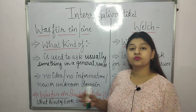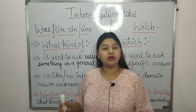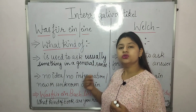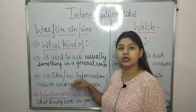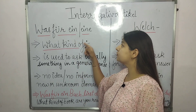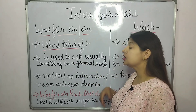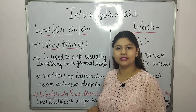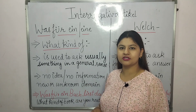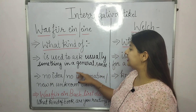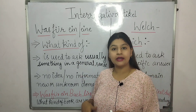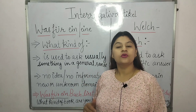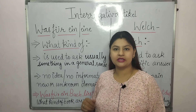So first of all, 'Was für ein oder eine' — the literal translation is 'what kind of.' We use 'Was für ein oder eine' to ask about something in a general sense: what kind of book are you reading, what kind of movie are you watching. We use it when we have no idea, no information, or when something new is involved.